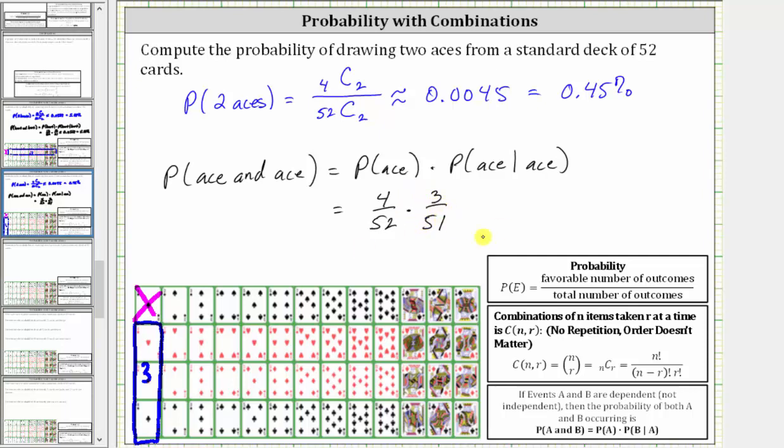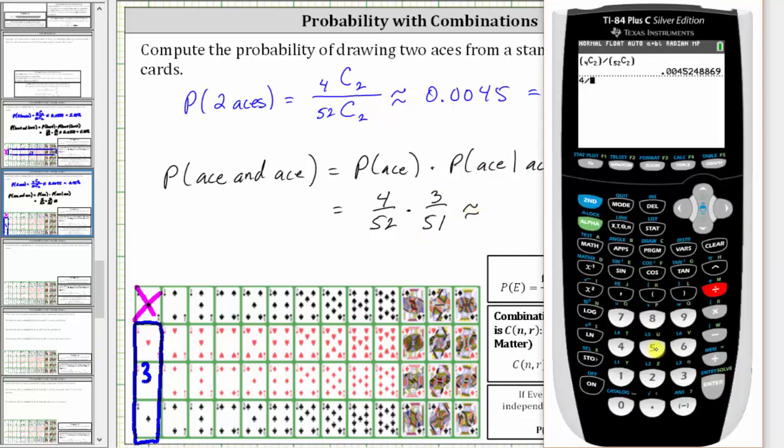So this product should also give us the same probability that we have above. Let's go to the calculator and verify. We have four divided by 52 times three divided by 51, enter, which does give us the same probability, approximately 0.0045.